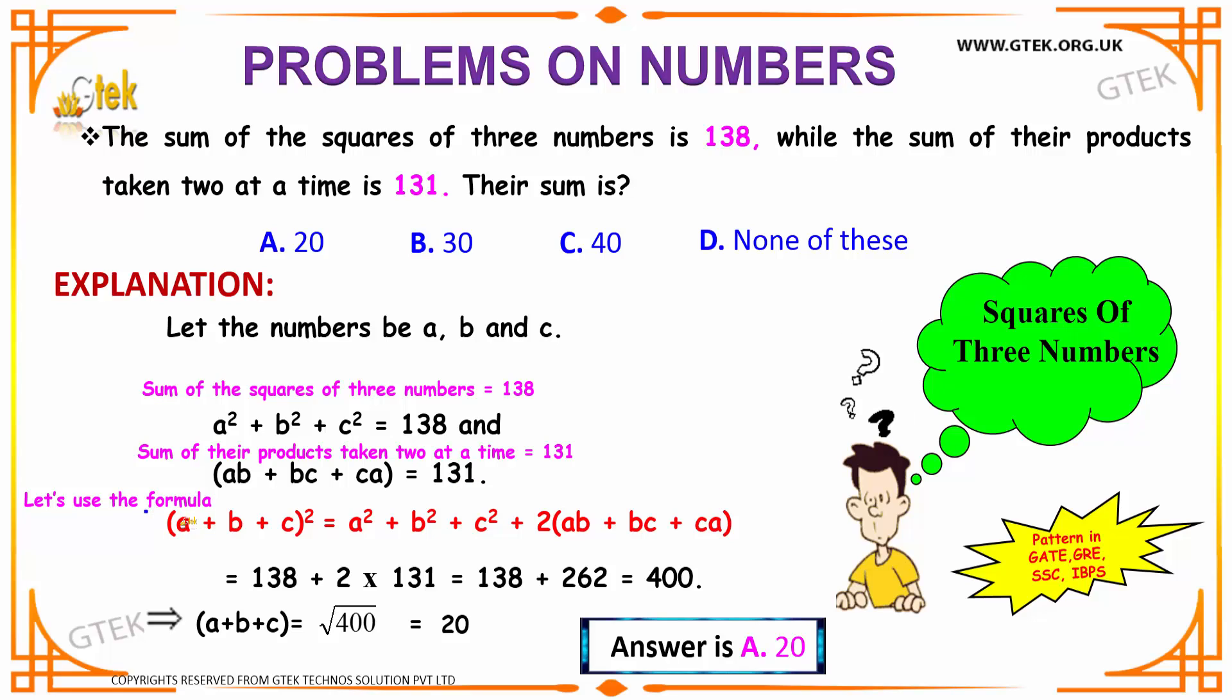By using the formula A plus B plus C the whole square is equal to A square plus B square plus C square plus 2 into AB plus BC plus CA.